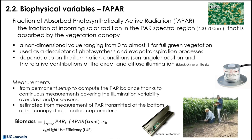If you want to measure an instantaneous value of FAPAR, you can still use a linear set of sensors, like a ceptometer, allowing you to measure the radiation above — as shown in the picture — and underneath the vegetation canopy.